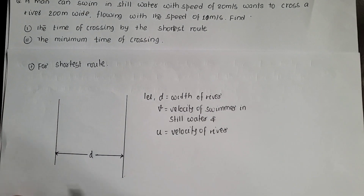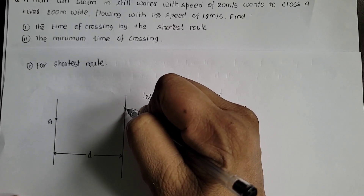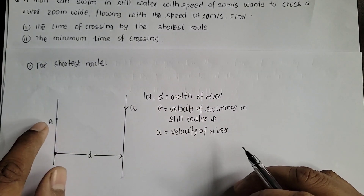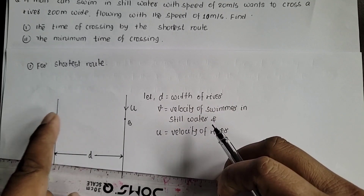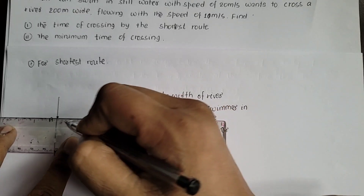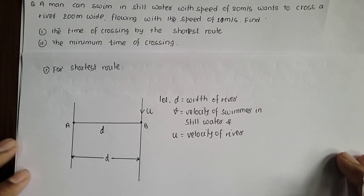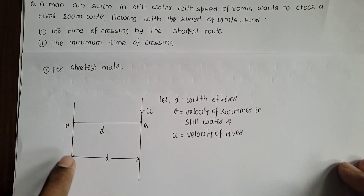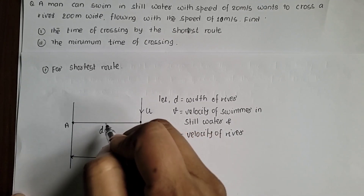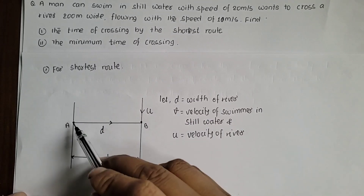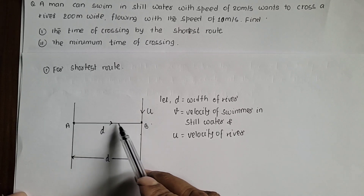For the shortest route: consider a river having width D. Suppose the swimmer is initially at point A. The river is flowing downward with velocity U. The swimmer wants to reach exactly the opposite end — point B — directly across. The distance to cover in the river equals the width D, which is known as the shortest route. So the swimmer must reach exactly opposite point B from A.